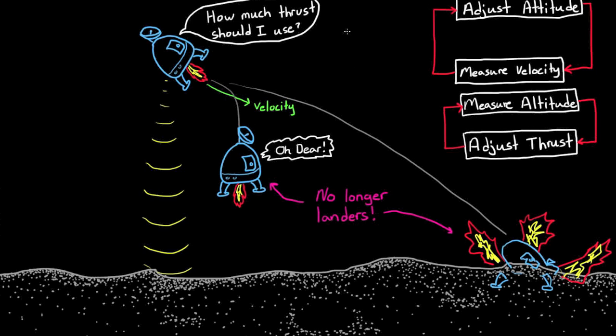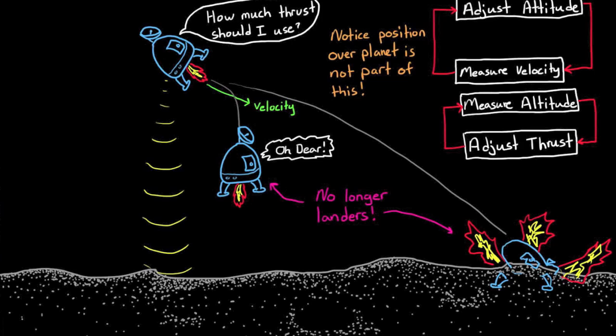Notice that this algorithm doesn't care about the horizontal location of the spacecraft, just velocity and altitude. And so there's no way for an algorithm like this to target a specific point on the surface of the planet. But that is the definition of a soft lander. It just needs to get down to the surface safely. Let's see what a soft lander algorithm looks like for something with an atmosphere, like Mars.